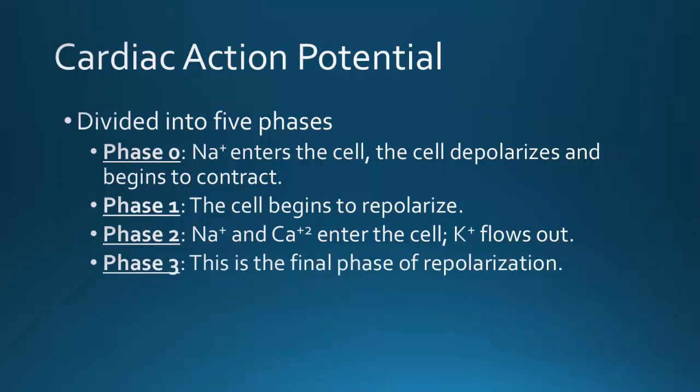Phase three is the final phase of repolarization. Slow calcium channels close, calcium is moved out of the cell, and potassium channels open. By the end of this phase, the membrane potential has been restored to its resting value. With repolarization complete, the cell can now respond to a new stimulus. On an ECG, the T wave represents phase three.